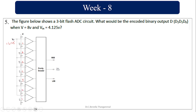Now compare VIN = 4.125 with each reference level. 4.125 < 7 → 0, < 6 → 0, < 5 → 0, > 4 → 1, > 3 → 1, > 2 → 1, > 1 → 1. This feeds an 8-to-3 priority encoder. From the 4th bit position, the output is 1, so the digital output is 1, 0, 0, which equals 4.